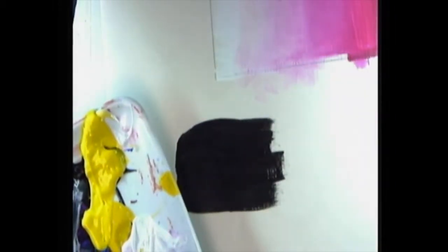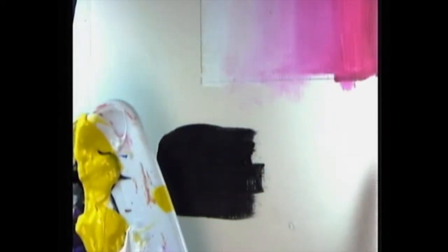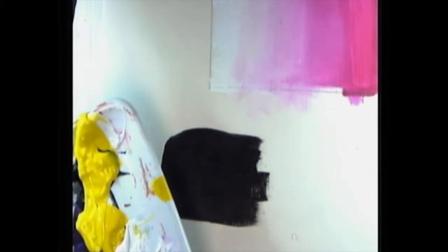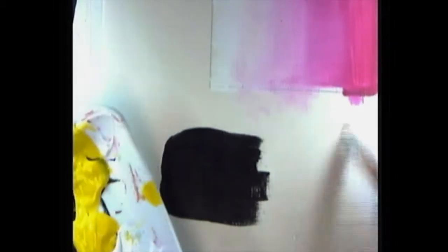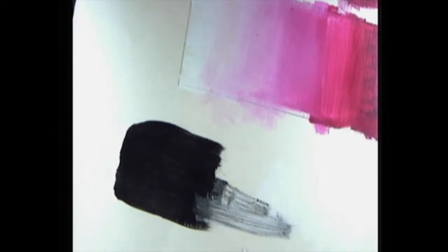Alright, so we're going to take black on one end and we're creating a grayscale here. We want to take black on one end and we are going to have white on the other. In your grayscale, as with the monochromatic painting, you're going to want to transition from one end of the spectrum to the other.